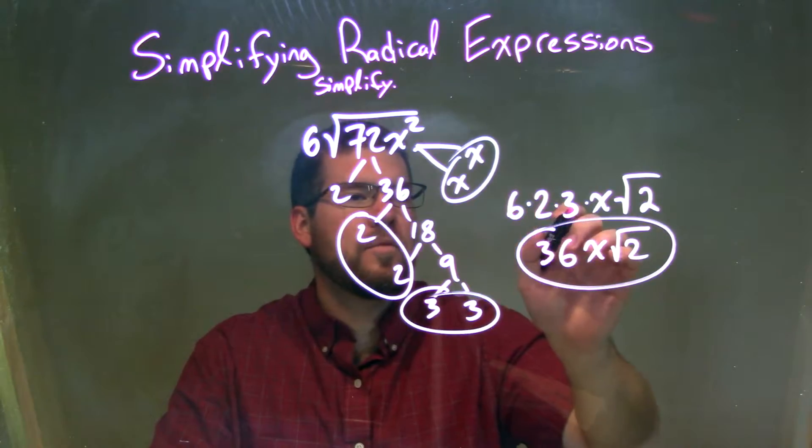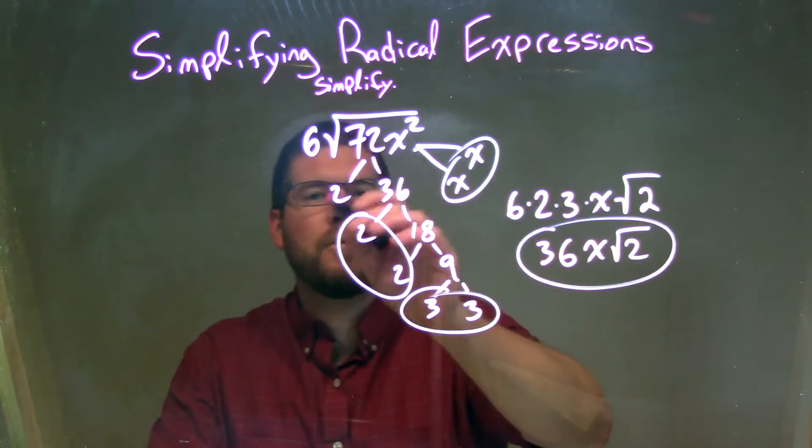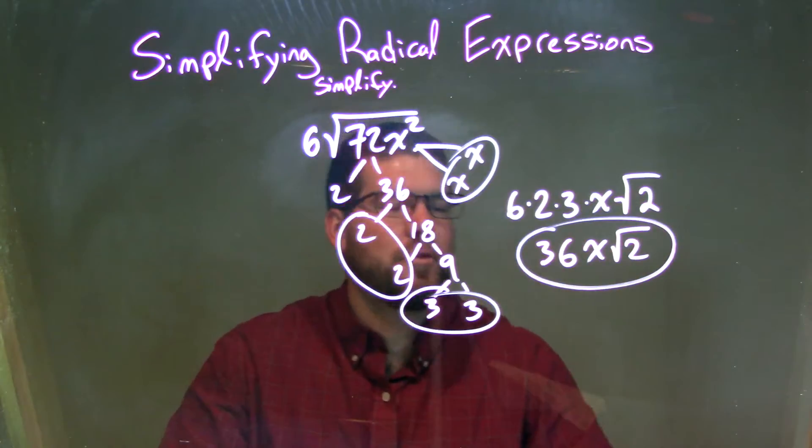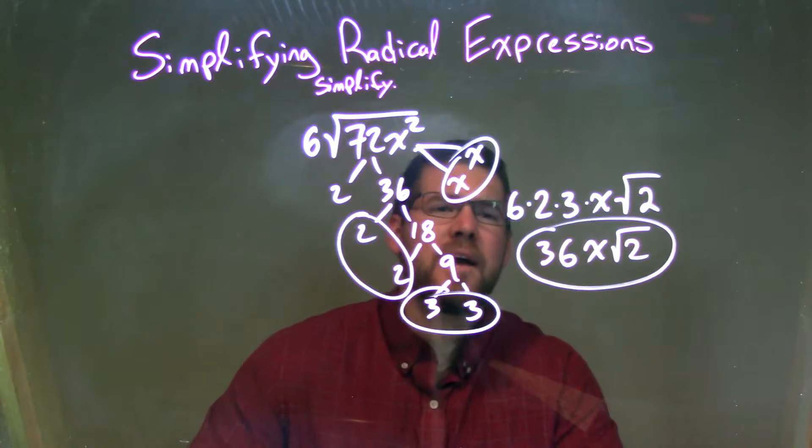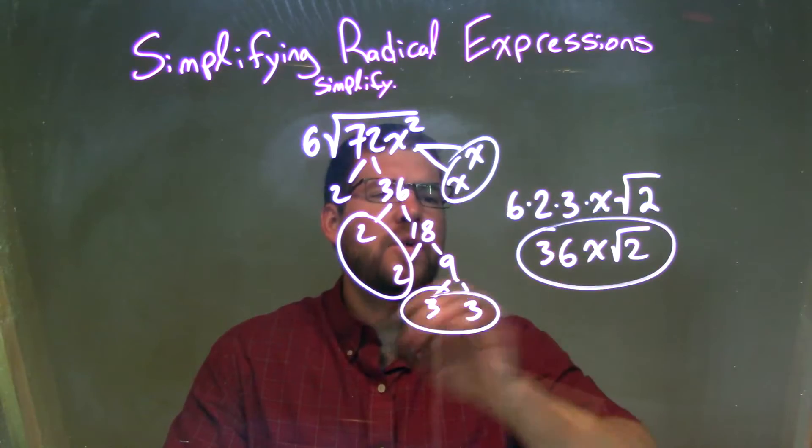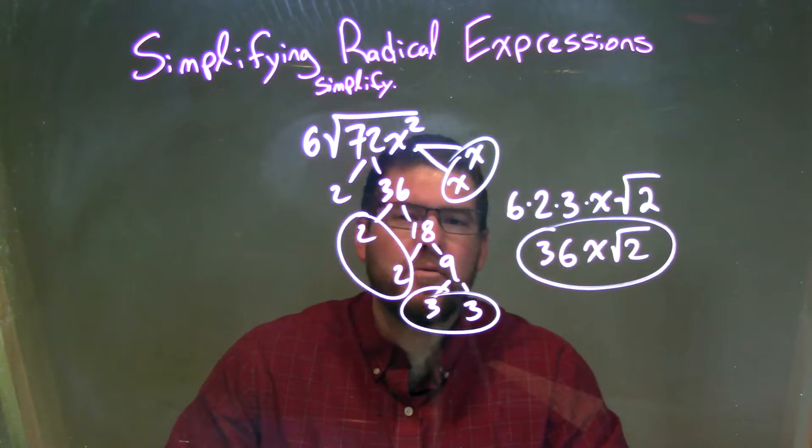So we have 6 already there. We have 2 times 3, and then times the x. And the one that was by himself, not paired, was the 2 that stays on the inside. We simplified, and we got our final answer to be 36x times the square root of 2.